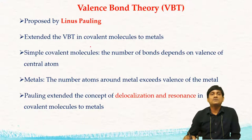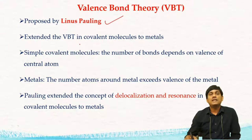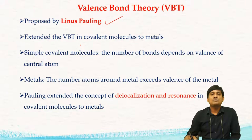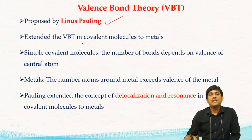Valency bond theory was proposed by Linus Pauling to explain the bonding in covalent molecules. The same valency bond theory was extended to the metals to explain bonding in metals by Linus Pauling.